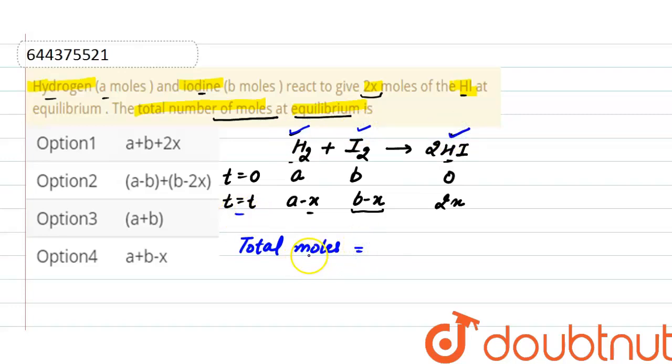So, total moles at equilibrium is (a minus x) plus (b minus x) plus 2x. This will be a plus b minus 2x plus 2x, which equals a plus b.